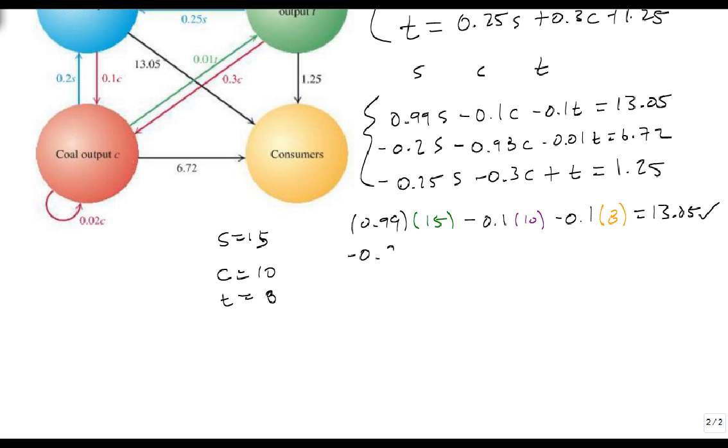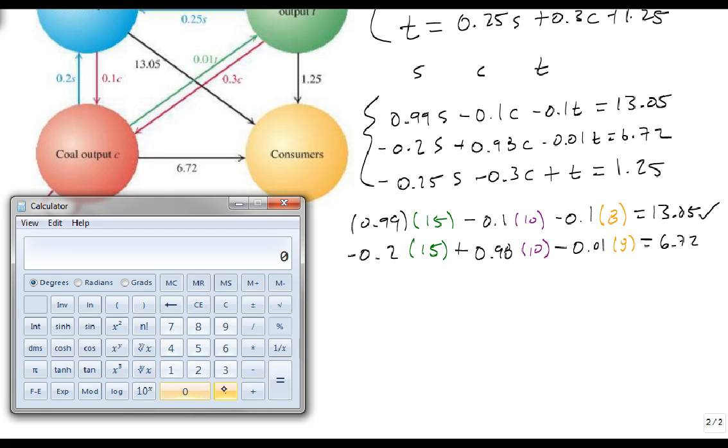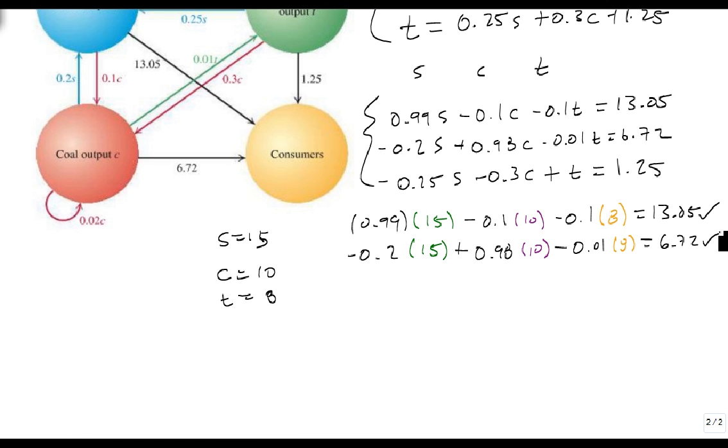But what about minus 0.2 times 15, minus 0.98, that should be a plus not a minus, plus 0.98 times 10 minus 0.01 times 8. Does that equal 6.72? So we get our calculator back out, minus 0.2 times 15 plus 0.98 times 10 minus 0.01 times 8 equals 6.72. So that one also checks out.